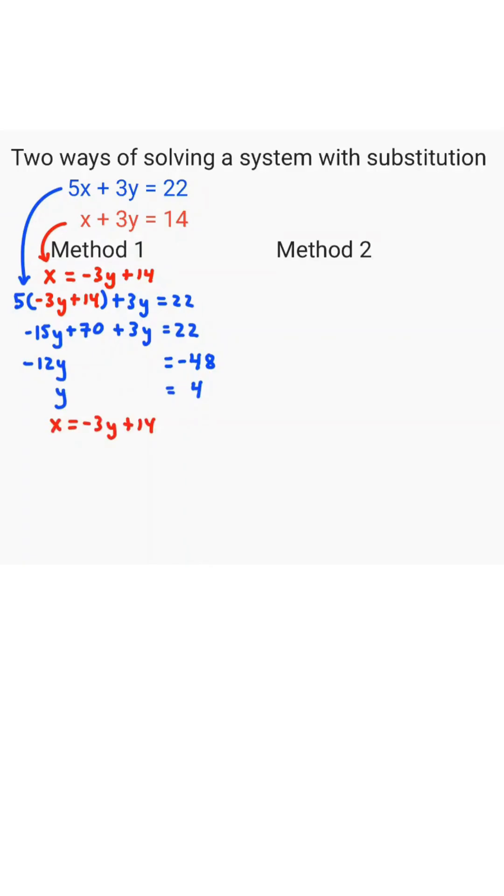To solve for x, we'll take that x equals negative 3y plus 14, we'll substitute in y equals 4. Negative 3 times 4 is negative 12, and then we add 14 to get 2. So our solution is 2, 4.